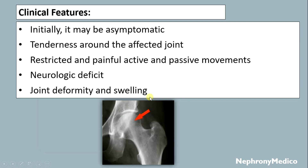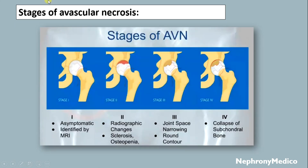The stages of avascular necrosis: Stage 1 is asymptomatic, identified by MRI. Stage 2 includes radiographic changes with sclerosis and osteopenia. Stage 3 includes joint space narrowing and subchondral changes. Stage 4 includes collapse of the subchondral bone.